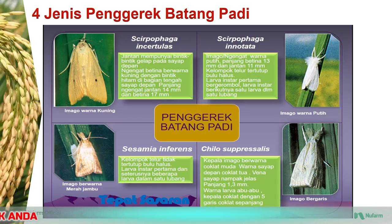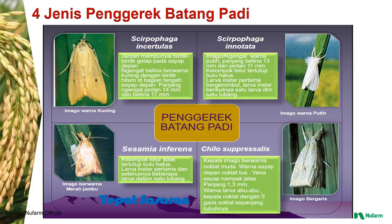Yang ketiga, Sesamia inferens atau penggerek batang merah jambu, dengan ciri kelompok telur tidak tertutup bulu halus, larva instar pertama dan seterusnya beberapa larva hanya dalam satu lubang. Dan yang keempat, Chilo suppressalis atau penggerek batang bergaris, dengan ciri kepala imago berwarna coklat muda, warna sayap depan coklat tua, vena sayap nampak jelas dengan panjang 1,3 mm, warna larva abu-abu, kepala coklat dengan lima garis coklat sepanjang tubuhnya.